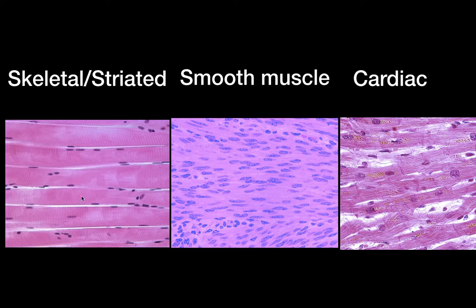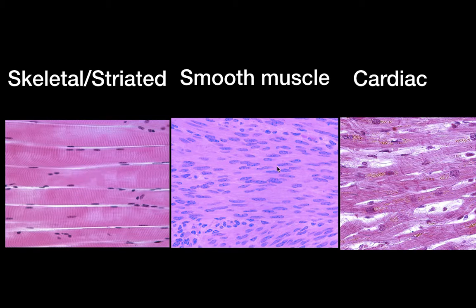We also have smooth muscles. Smooth muscles are going to be involuntary muscles — like the muscles that operate in the lower portion of my esophagus, the large intestine, and small intestine. They have different structures and work a little differently, and because they're involuntary, you don't really have to think about them.